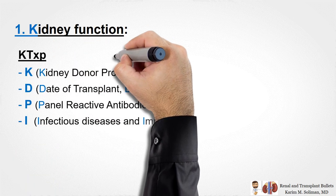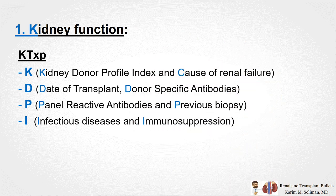If it's a kidney transplant case, remember to add eight items with the mnemonic KDPI. K for KDPI — kidney donor profile index — and cause. D for day of transplant and donor-specific antibodies if previously checked. P for panel-reactive antibodies and previous biopsy. I for infectious disease — which includes CMV, PCP, fungal, and BK — and immunosuppression, which includes induction and maintenance immunosuppression.